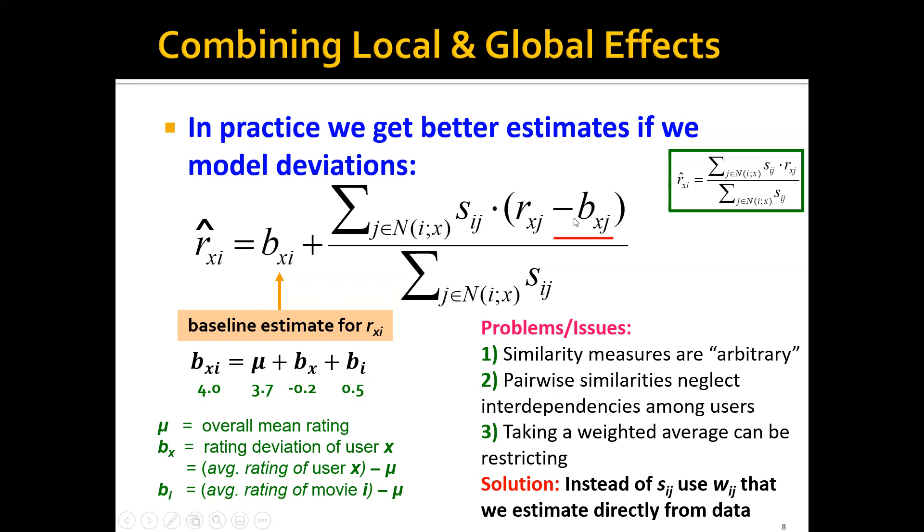And for the second term, this is actually the same as the old item-to-item collaborative filtering, except that for each r_xj, we're actually subtracting it by the baseline estimate for the corresponding r_xj here.